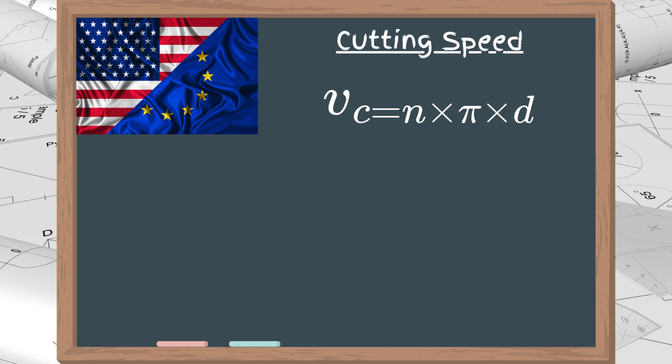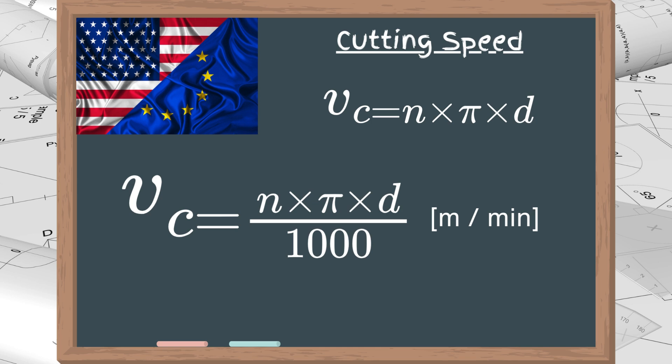So, to get the cutting speed in meters per minute, the final formula is n times pi times d divided by 1000. To get the result in SFM, you just need to swap the 1000 with 12.